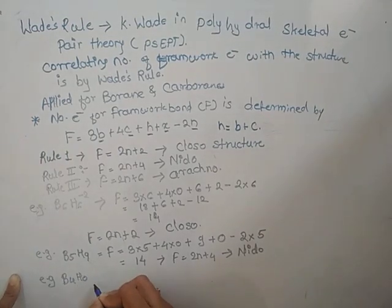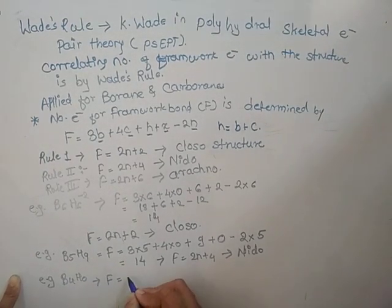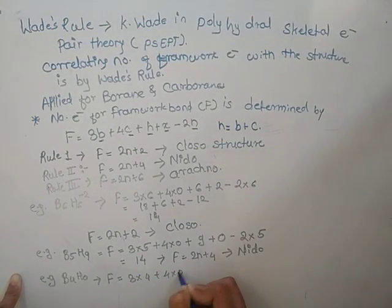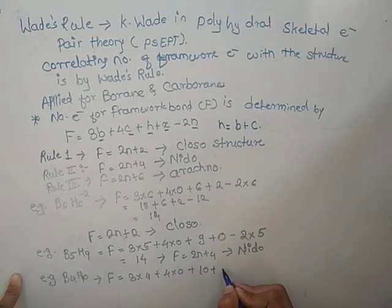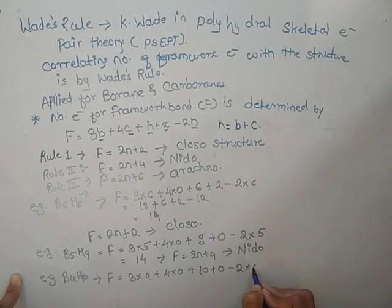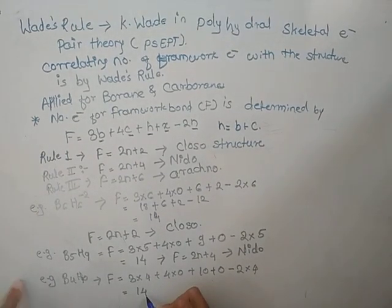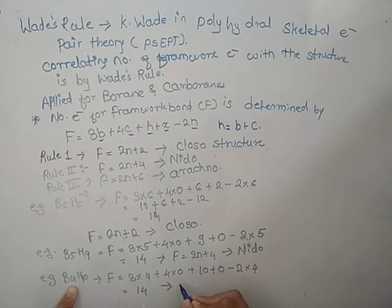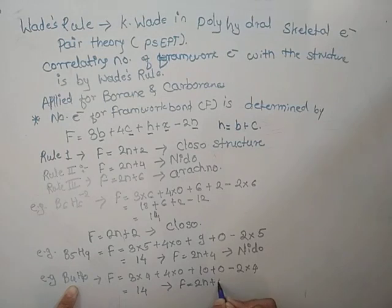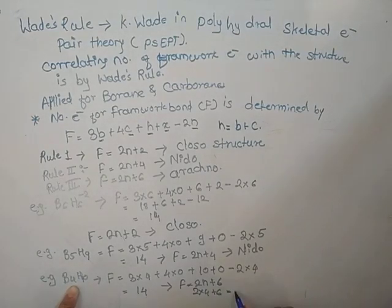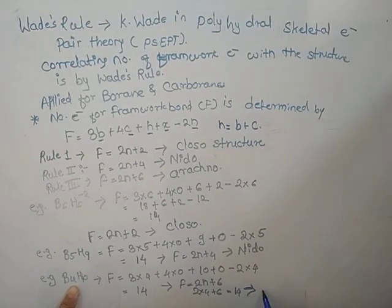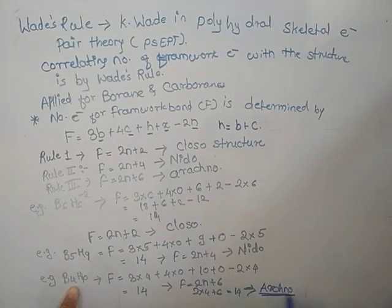Third example: B4H10. F is equal to 3 into 4 plus 4 into 0 plus 10 plus 0 (no negative charge) minus 2 into 4, which equals 14. Comparing to 2N plus 6: since N equals 4, 2 into 4 plus 6 equals 14. So the structure is arachno.